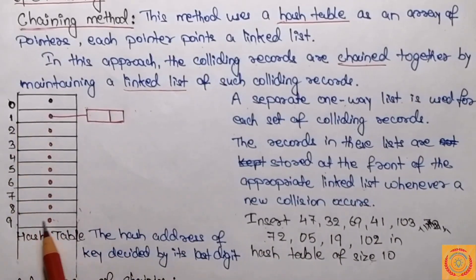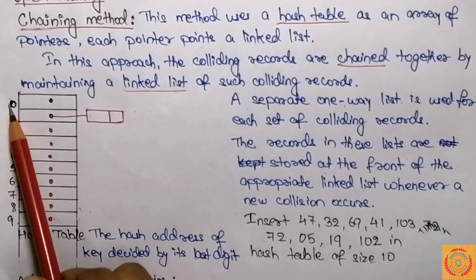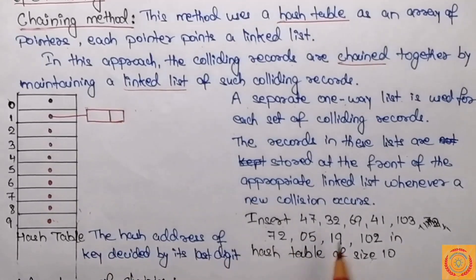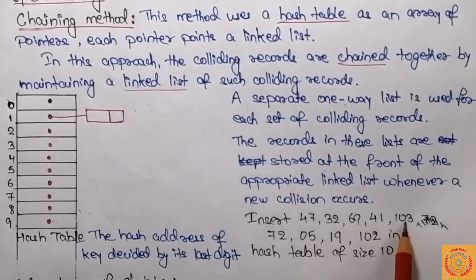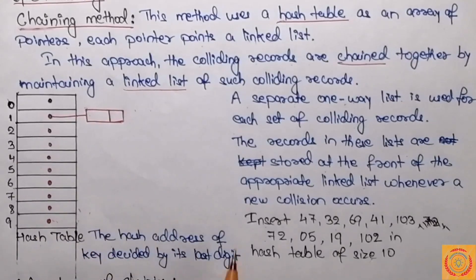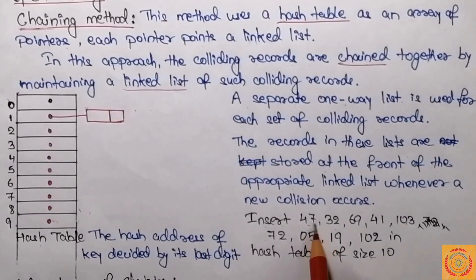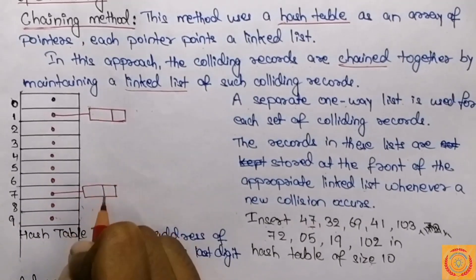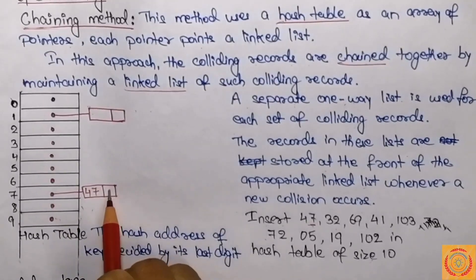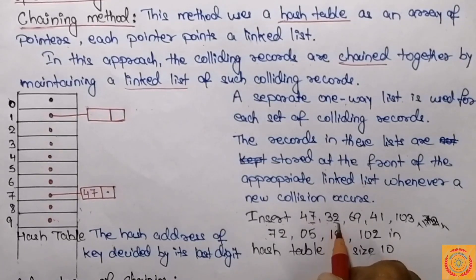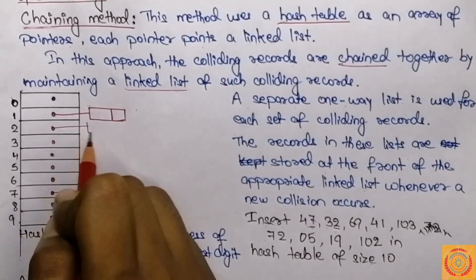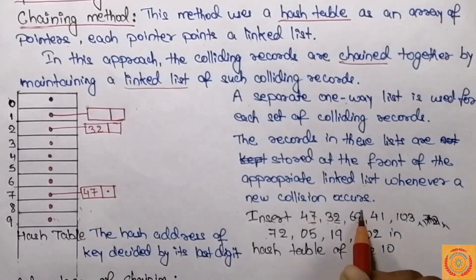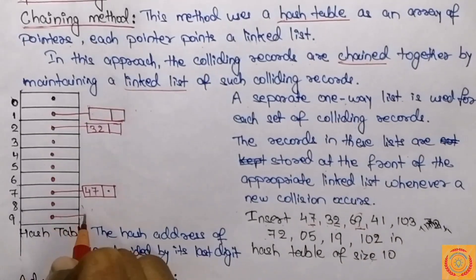Let's try to insert these elements in a hash table of size 10, where the index varies from 0 to 9. We are considering that the hash address of a key is decided by its last digit. For the first data 47, the last digit is 7, so at the 7th index we create a linked list and store 47. The next data is 32 — last digit 2 — so at the 2nd index we store 32. Then 69 — last digit 9 — so at the 9th index we store 69.